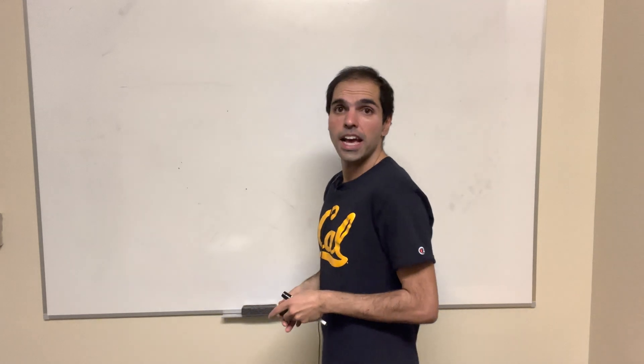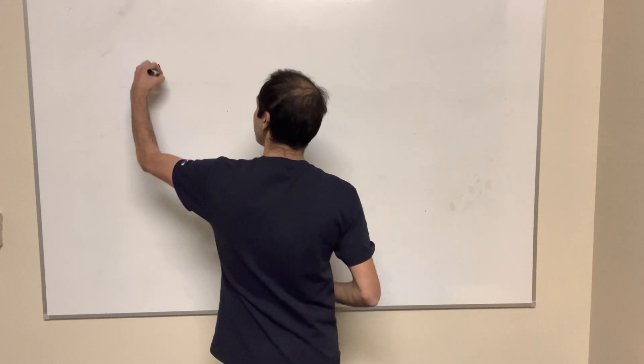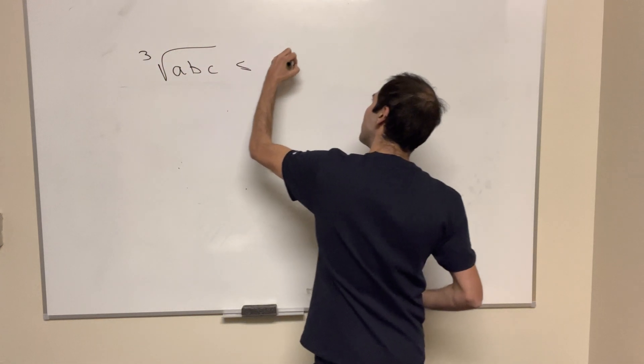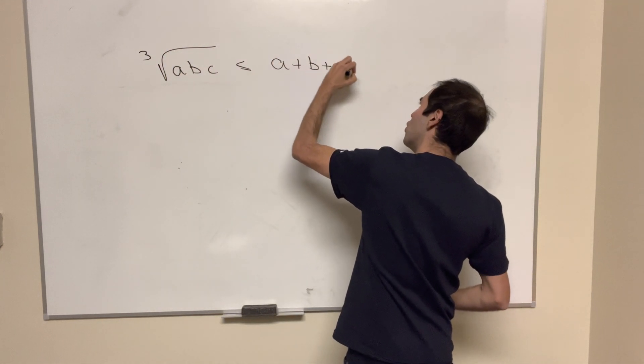Well, AM-GM then just becomes that the cube root of abc is less than or equal to a plus b plus c over 3.